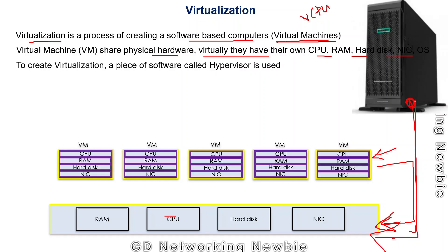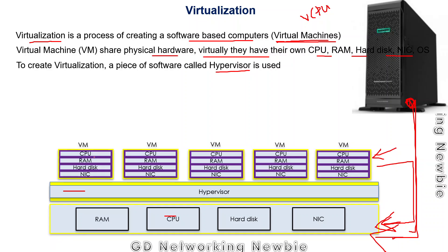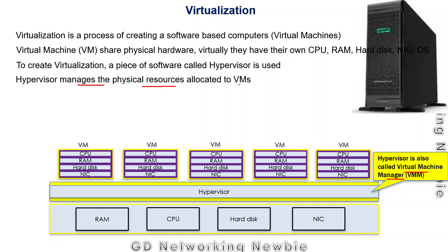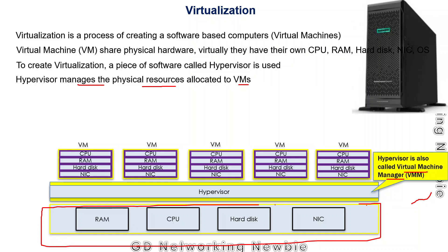Creating virtual machines is made possible by a piece of software known as a hypervisor. The hypervisor is used to create these virtual machines. This hypervisor is also known as a virtual machine manager. The virtual machine manager manages the physical resources allocated to virtual machines — deciding how much of the physical resources to give to the first virtual machine, the second virtual machine, and so on.